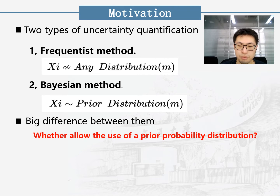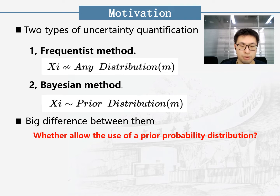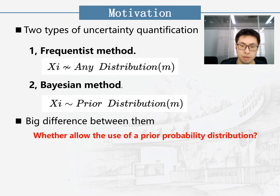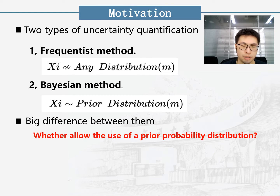For uncertainty quantification, methods are statistically divided into two types: frequentist methods and Bayesian methods. The frequentist does not assume any prior distribution, does not refer to past experience, and only conducts probability inference according to existing data. However, Bayesian methods assume the existence of a prior distribution, and then use sampling to gradually modify the prior distribution and approximate the real distribution. The biggest difference between them is whether to allow the use of a prior probability distribution.